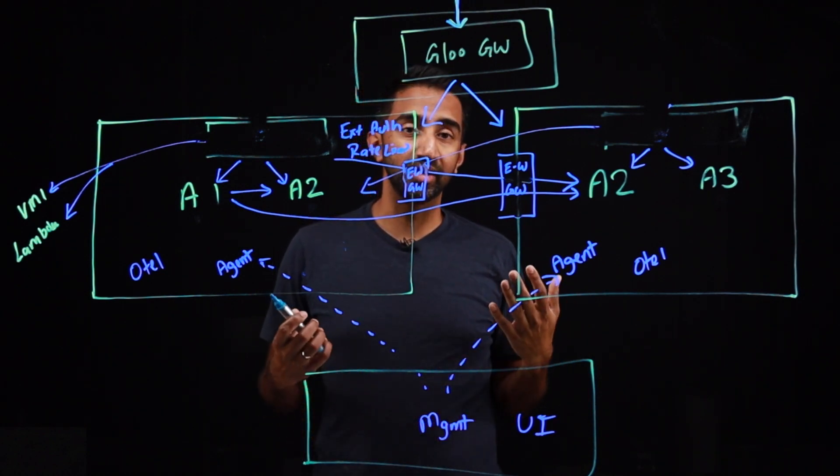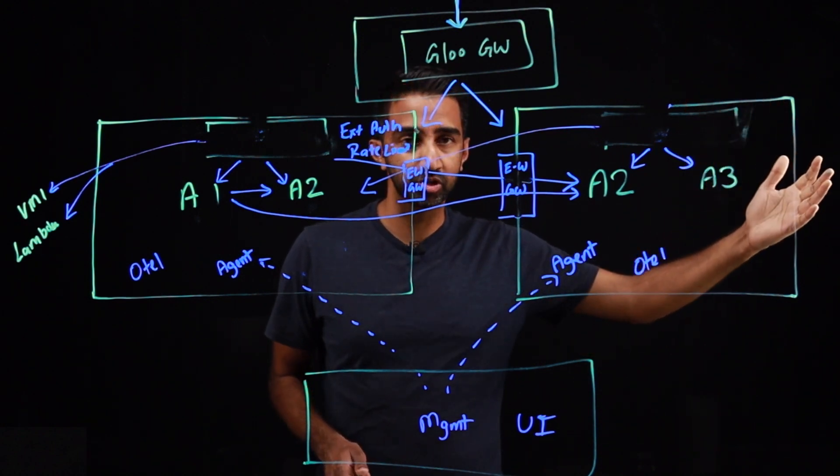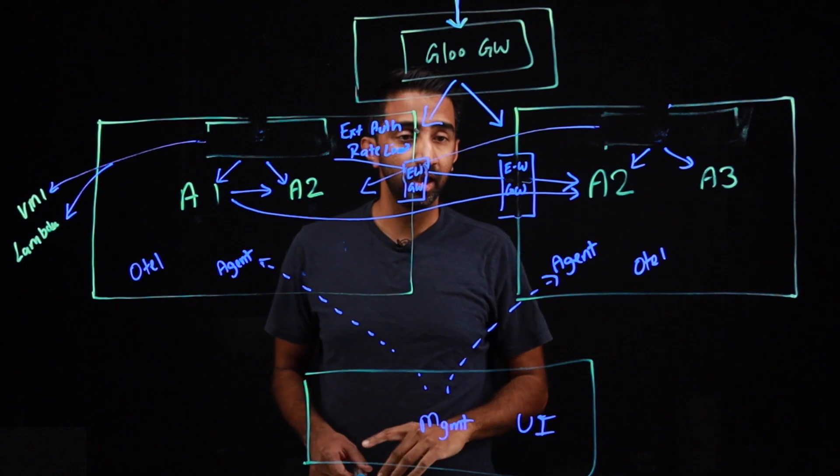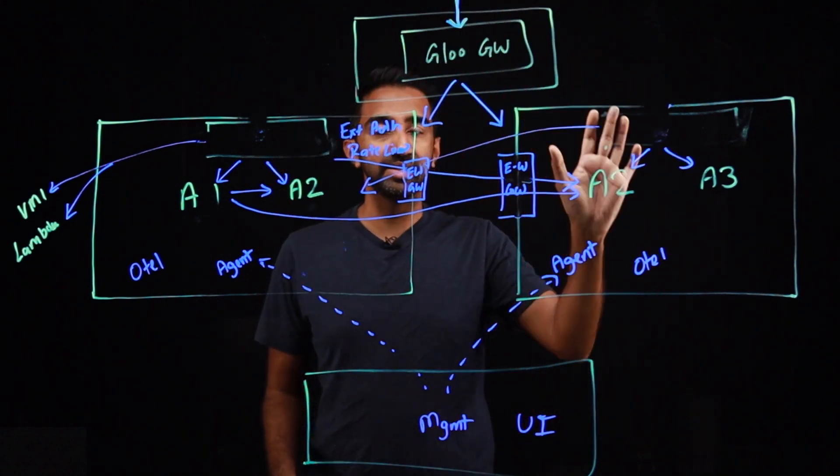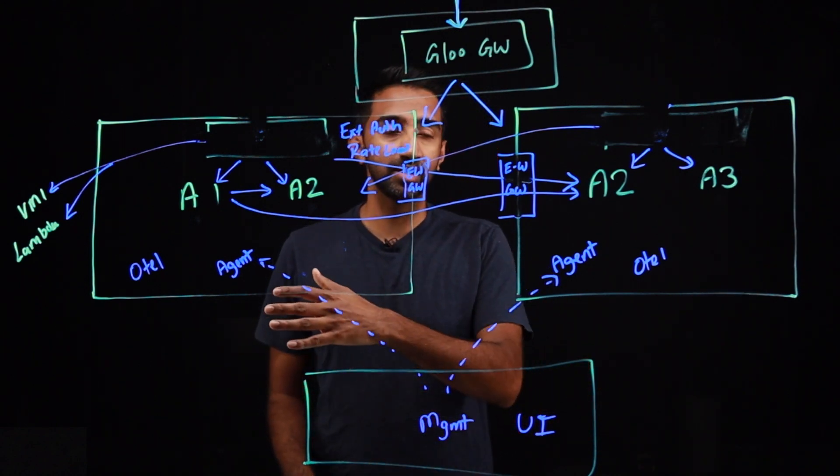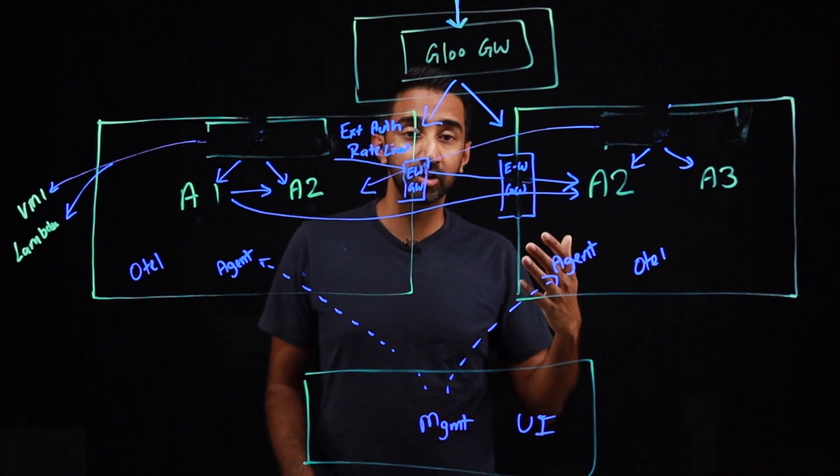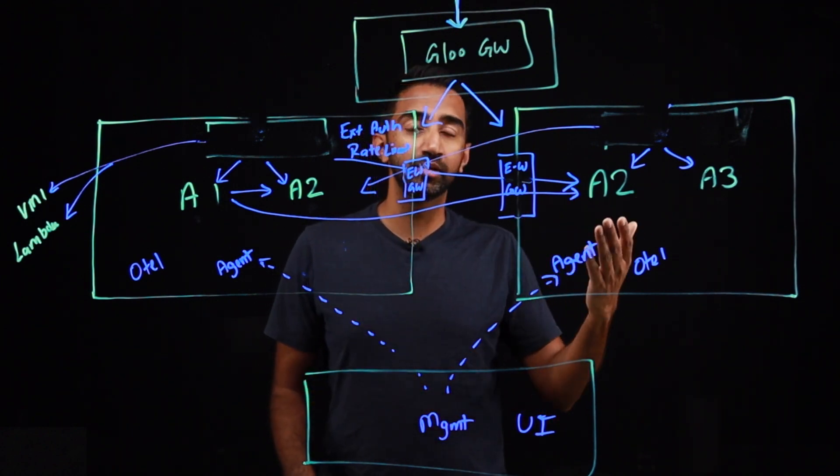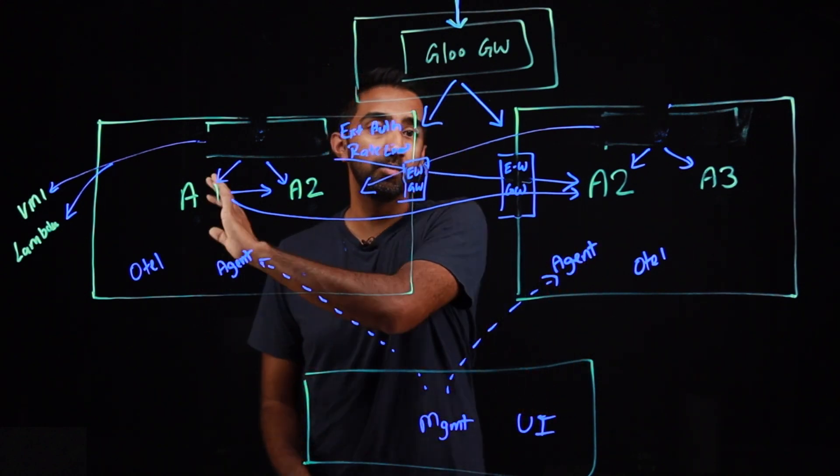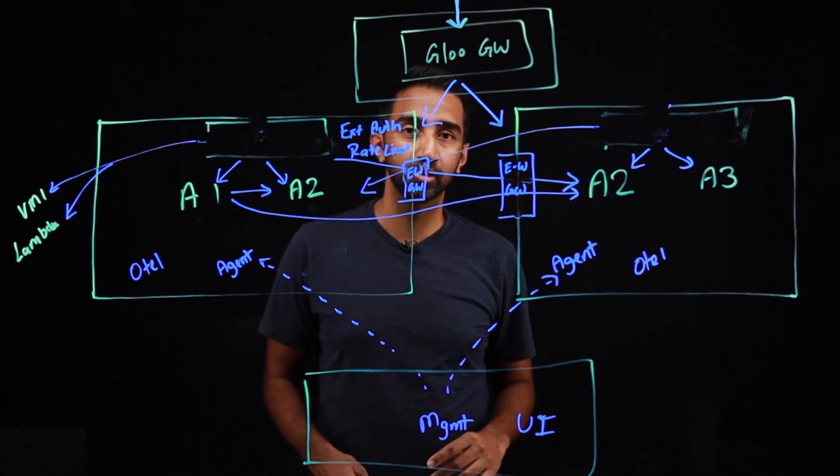This architecture is very scalable because you can add more and more clusters and you can add workloads to those clusters without impacting every other cluster. And you can also deploy one of these instances per region. You can leverage, because all of the components are modular, you can reuse components as necessary and only deploy the components that are required per cluster. A single management plane can control multiple clusters, multiple workload clusters, as well as multiple gateway clusters.